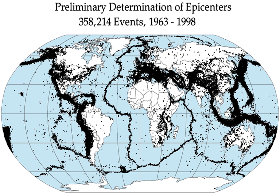There are three main types of fault, all of which may cause an interplate earthquake: normal, reverse and strike-slip. Normal and reverse faulting are examples of dip-slip, where the displacement along the fault is in the direction of dip and movement on them involves a vertical component. Normal faults occur mainly in areas where the crust is being extended such as a divergent boundary. Reverse faults occur in areas where the crust is being shortened such as at a convergent boundary. Strike-slip faults are steep structures where the two sides of the fault slip horizontally past each other. Transform boundaries are a particular type of strike-slip fault. Many earthquakes are caused by movement on faults that have components of both dip-slip and strike-slip; this is known as oblique-slip.